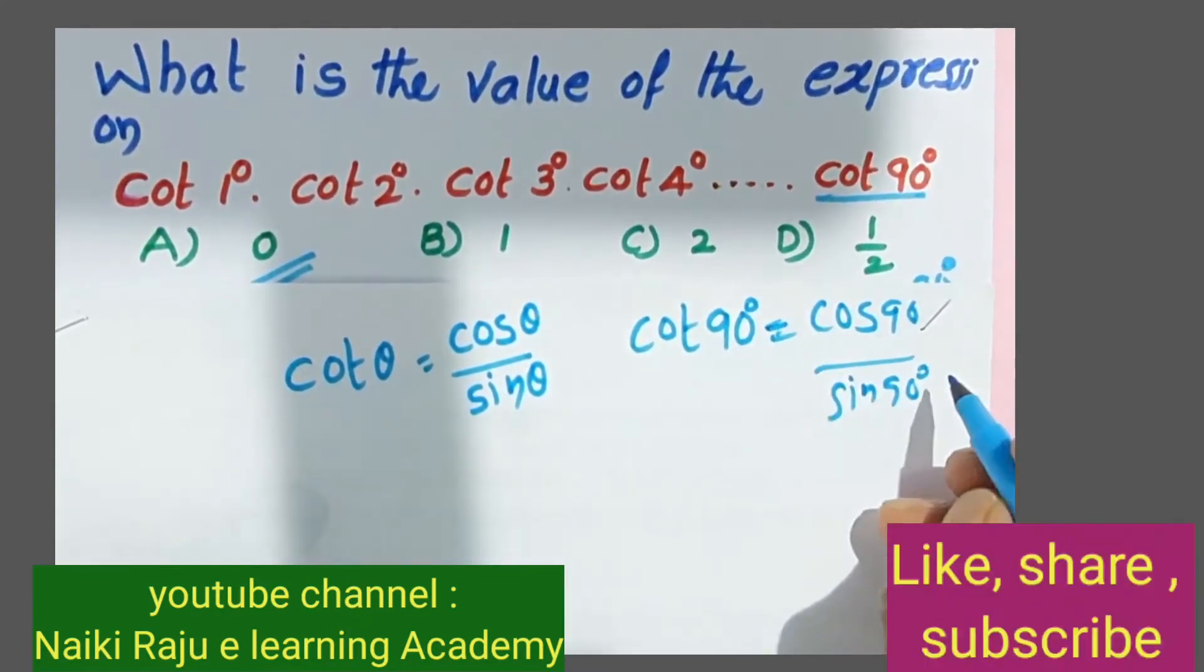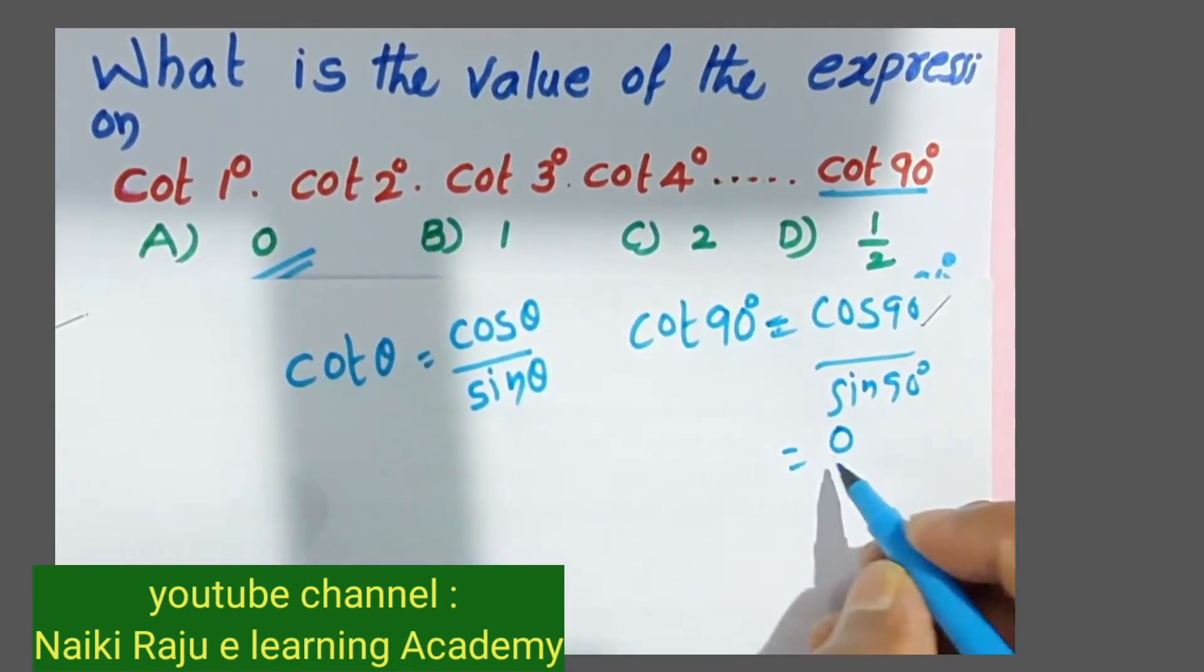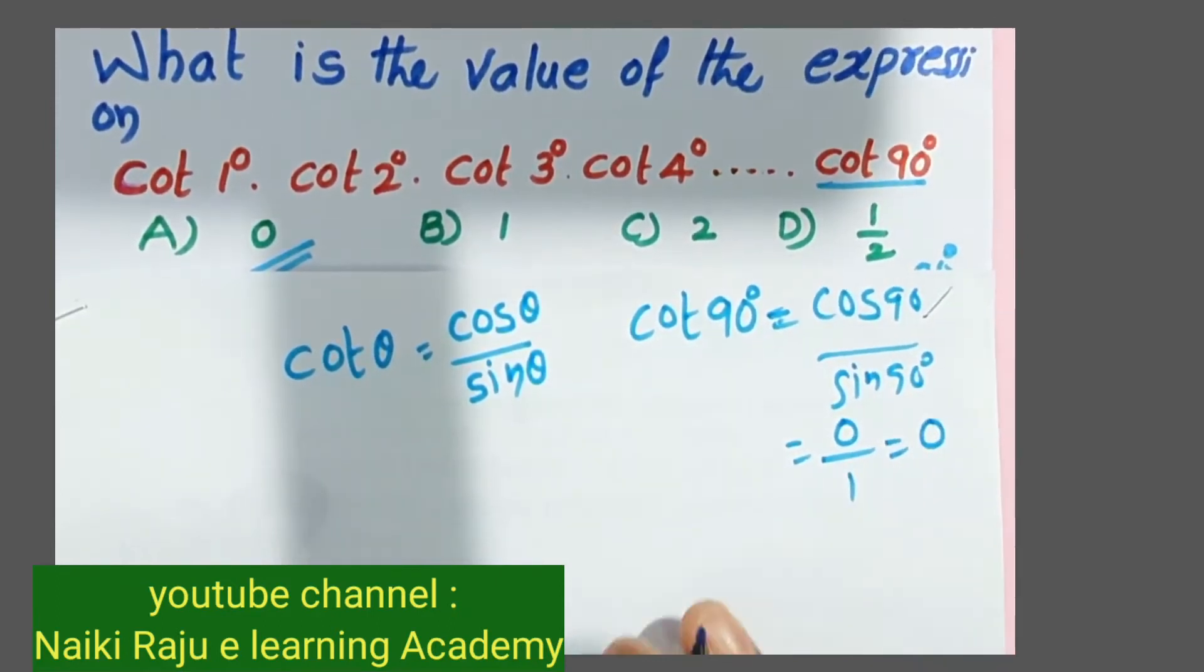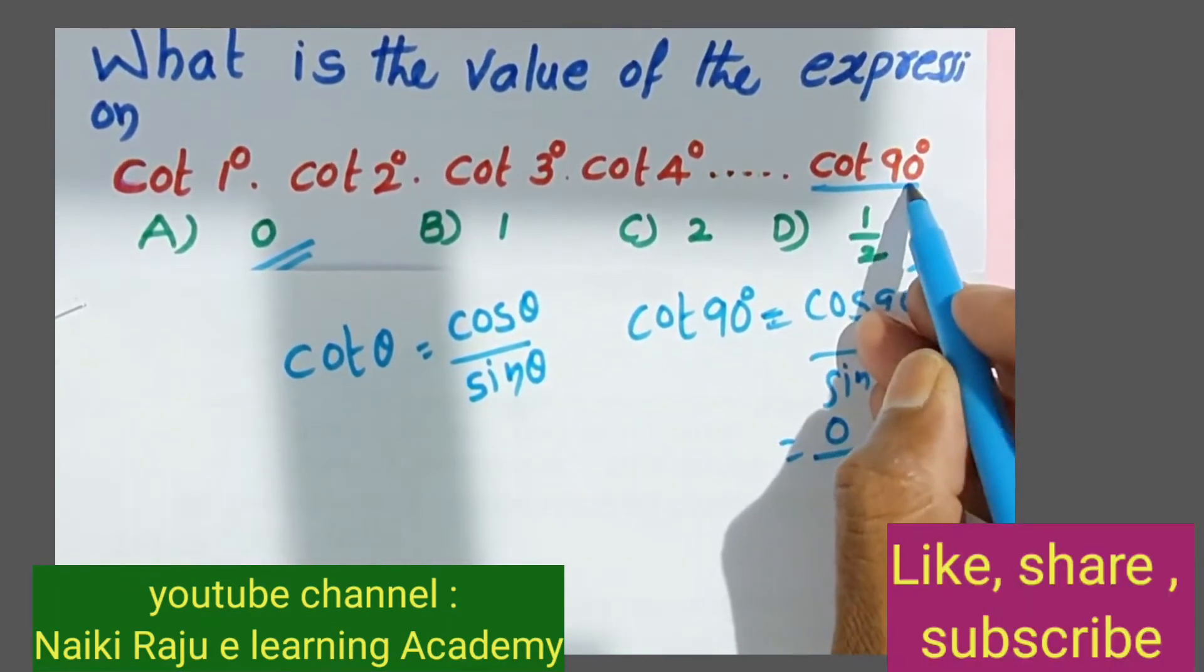Cos 90° equals 0, and sin 90° equals 1. So 0 divided by 1 equals 0. Therefore, cot 90° is equal to 0.